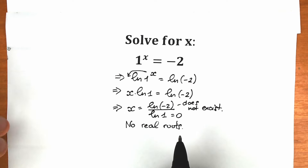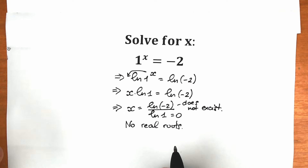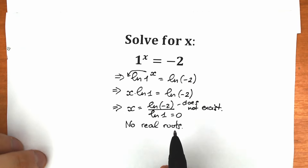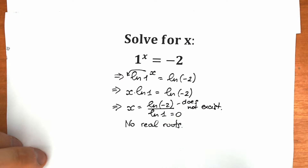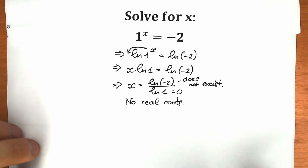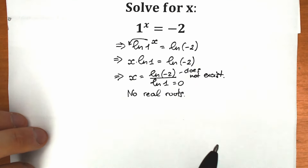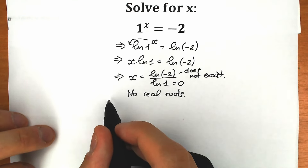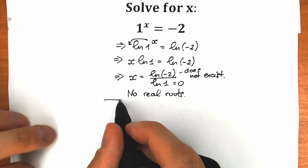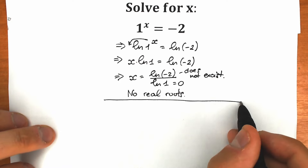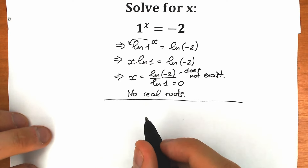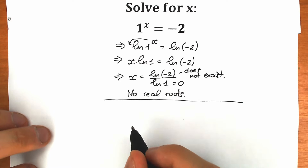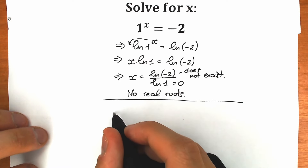But for math lovers, I'm going to show you this approach in terms of complex numbers so we will actually find our x. I hope you enjoy and understand my explanation. First, I'm going to start with Euler's identity, which is really important for this question.